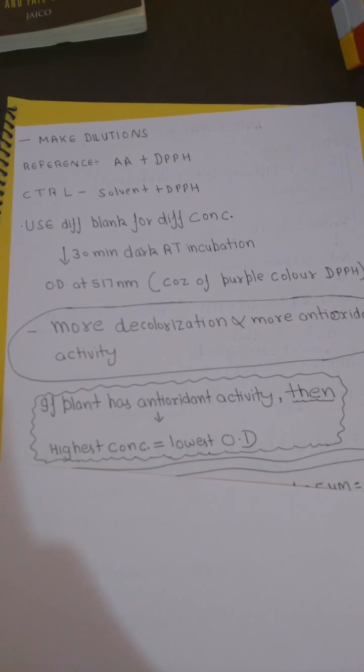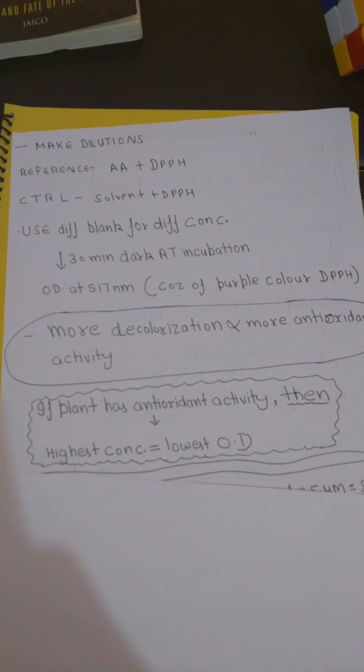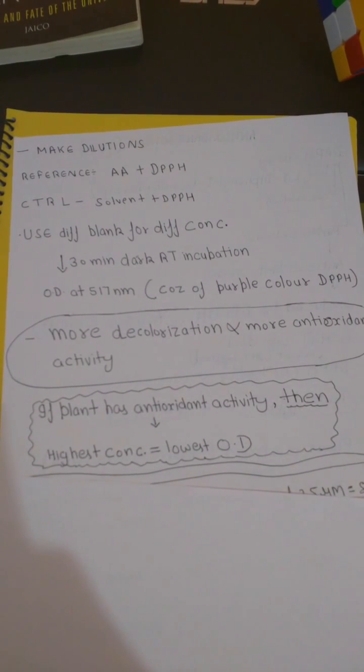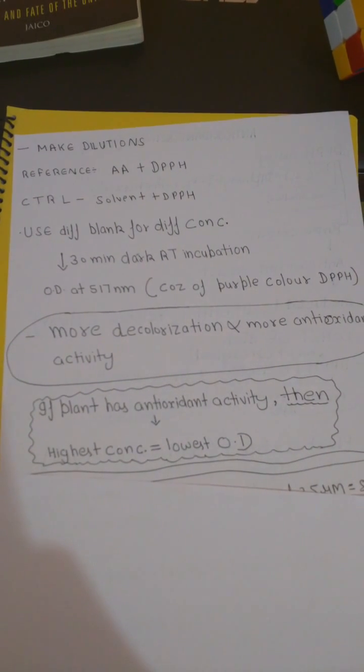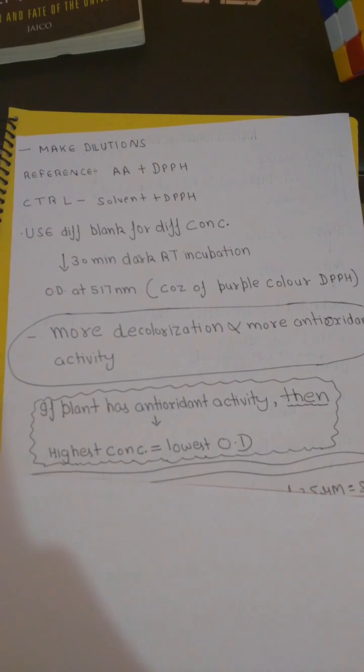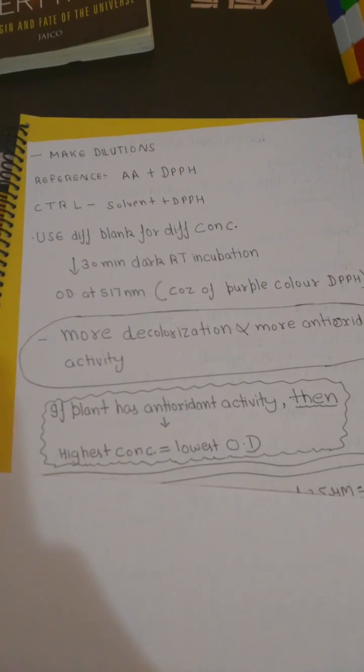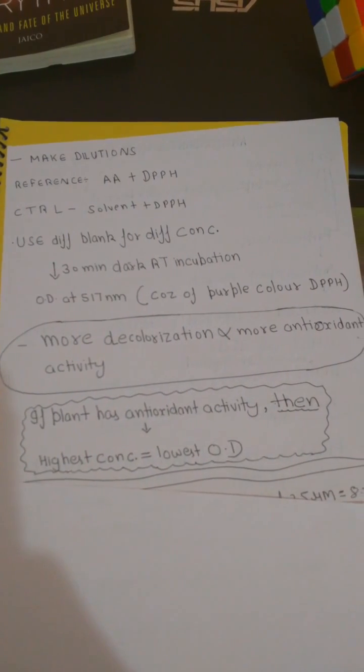What I mean by this is that since your highest concentration of plant extract, suppose it has antioxidant activity, then it will convert more of the purple color DPPH into the yellow color DPPHH. As a result, less of the purple color DPPH will be there to give OD.